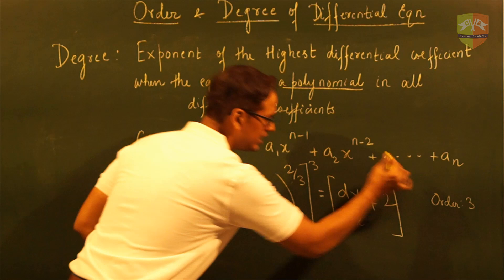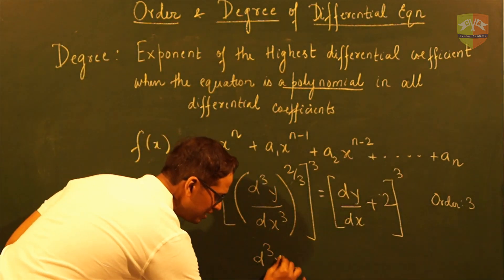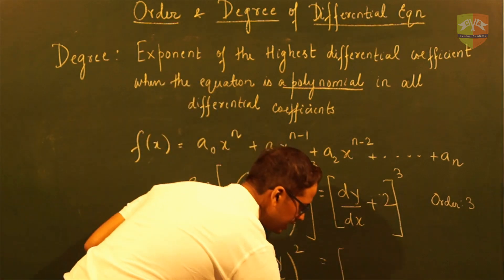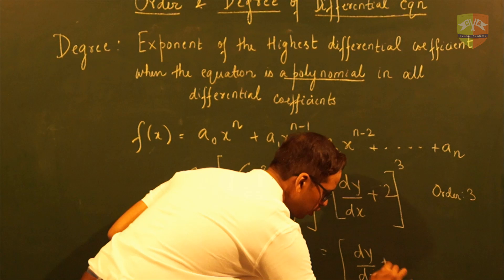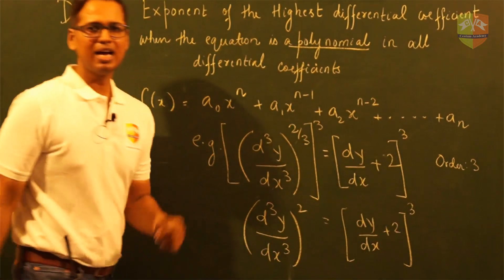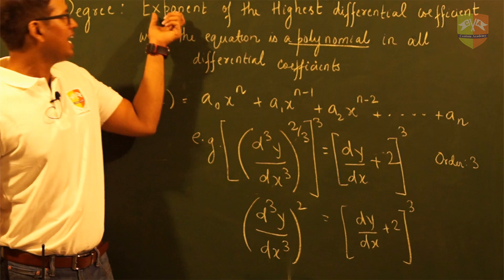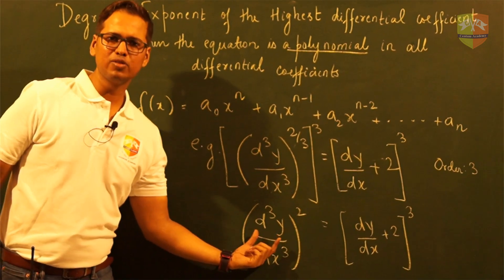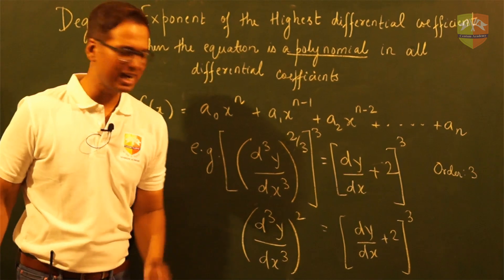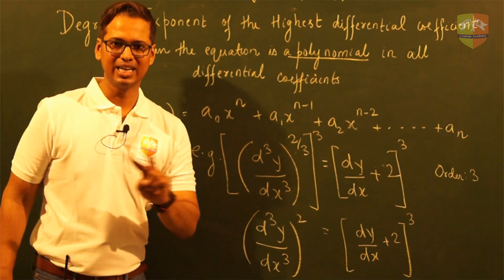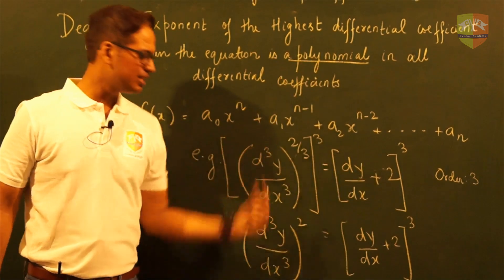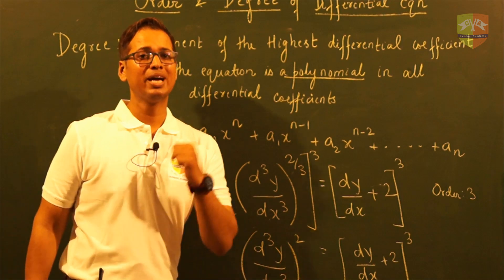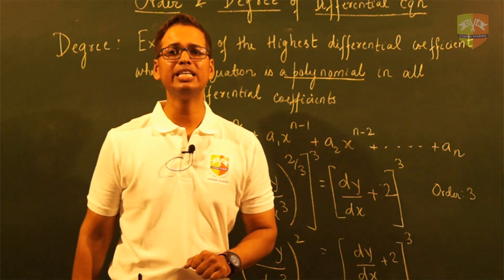When I cube both sides of the equation, I get d³y by dx³ whole squared equal to (dy by dx + 2) whole cube. Now, what is the exponent of the highest differential coefficient? The highest differential coefficient is d³y by dx³, and the exponent of that is 2. So having converted it to a polynomial, the power of the highest differential coefficient is 2. Hence, this differential equation will have a degree of 2.